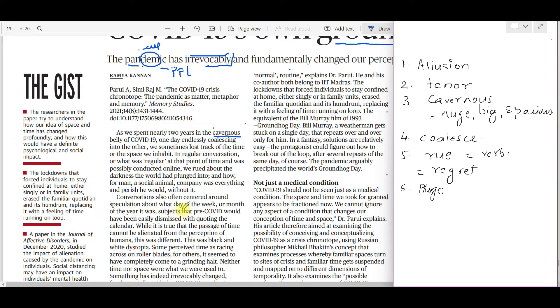The article says: 'conversations also often centered around speculation about what day of the week or month of the year it was.' See how it's being said again that we've lost track of time because every day seamlessly coalesces into another. You'll agree that sometimes during extended holidays, we don't know if it's Sunday or Monday because every day looks the same.